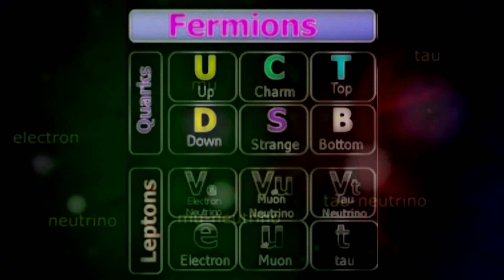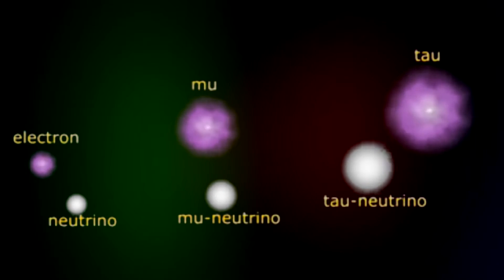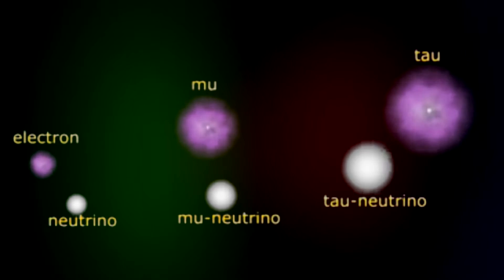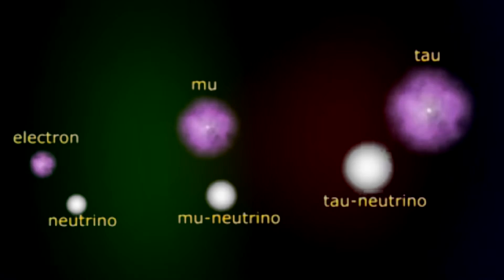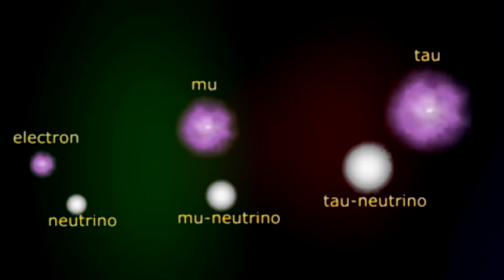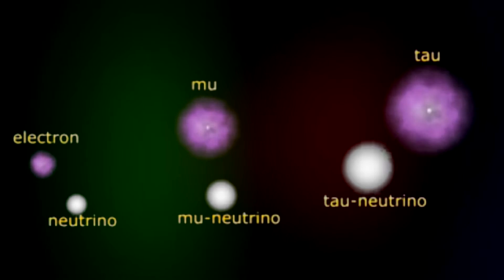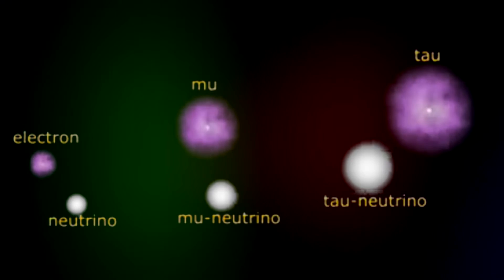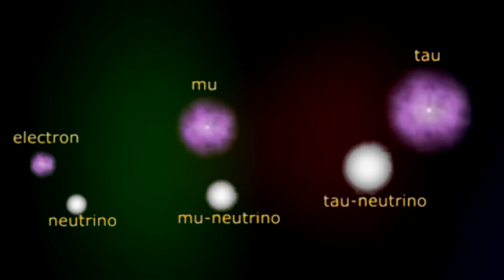Now let's dive into flavors. When referring to flavors, I am talking about the six different types of leptons. There are two classes we should be familiar with first: charged leptons and neutral leptons, also referred to as neutrinos. There are three charged leptons — the electron, the muon, and the tau — and the three neutral leptons are the electron neutrino, the muon neutrino, and the tau neutrino.